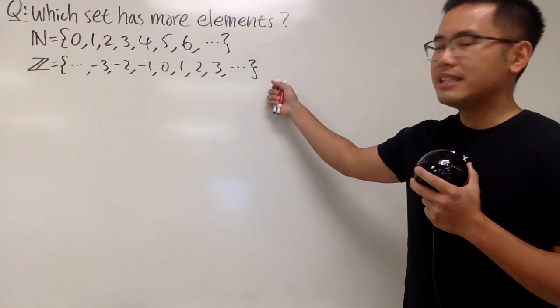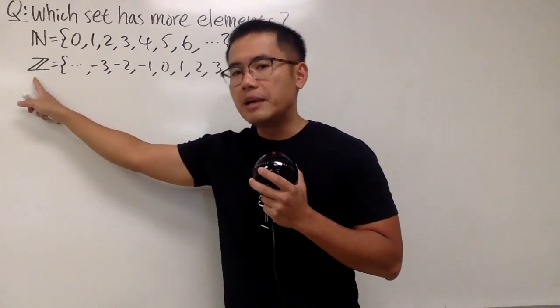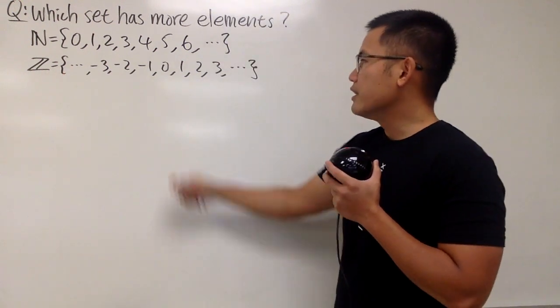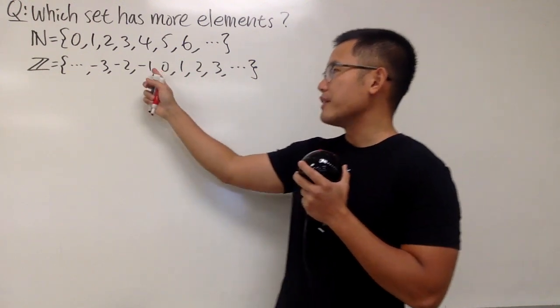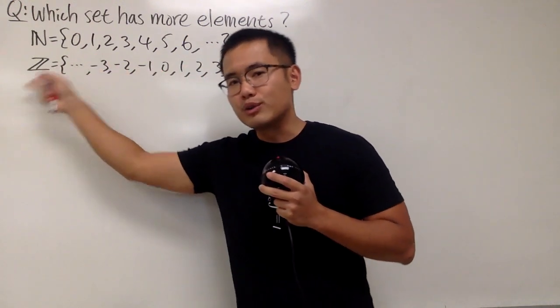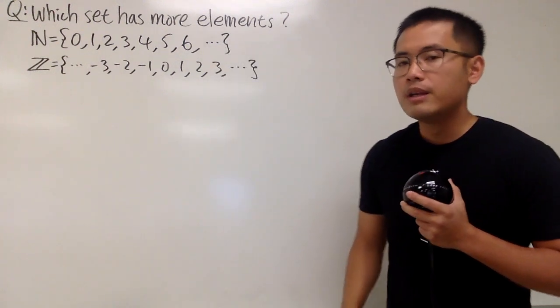And for the second set, as you can see, we have Z, namely the set of all the integers. And of course we have 0, 1, 2, 3, 4, 5, 6 right here already, and we also have the negative 1, negative 2, negative 3, and so on over there as well.